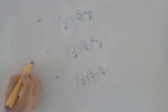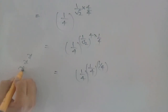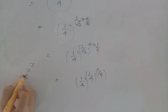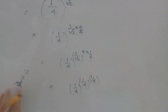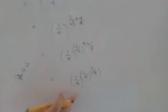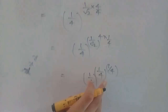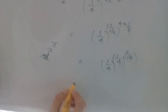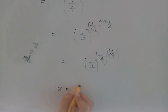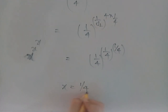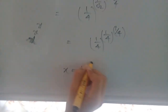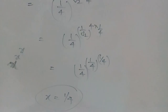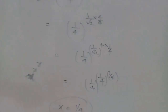So this matches the form x power x power x. Therefore x power x power x equals 1 by 4 whole power 1 by 4 whole power 1 by 4. By comparing, x is equals to 1 by 4. In this way we can solve this one. Thank you for watching this video and please subscribe.